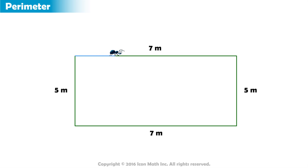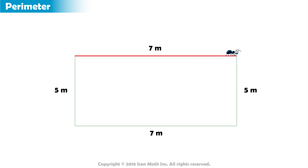The ant starts moving to the right in a straight line until it covers the entire length of the top side and reaches the opposite corner. At this point, the ant has traveled a distance equal to the length of the top side of the rectangle, which is 7 meters.